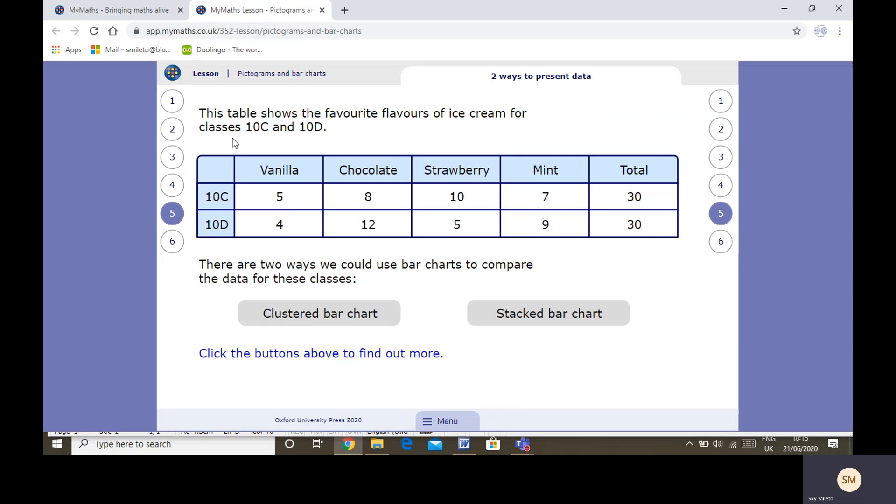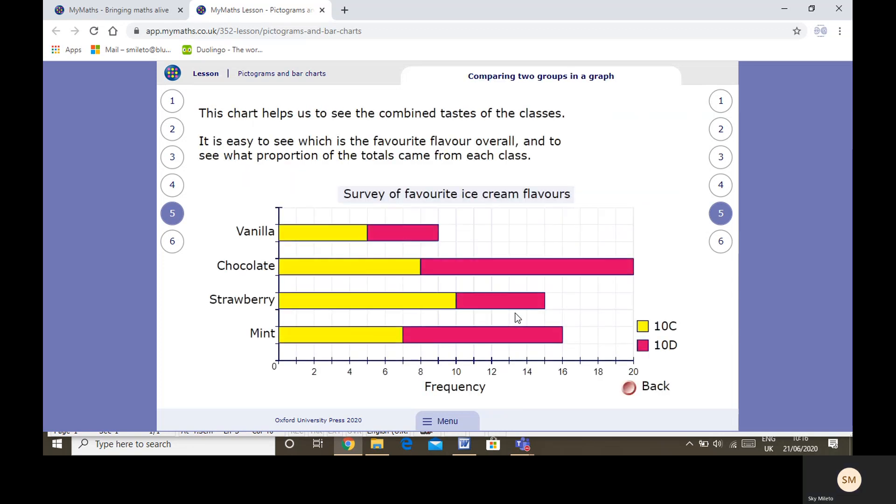This table shows favourite flavours ice cream from classes 10C and 10D. There are two ways which we use bar charts for these classes. We could use a clustered bar chart or a stacked bar chart. Now we're just going to look at stacked bar chart today. Here we can see the difference, and we've got one class, and then on top of that, we've got the other class. So then we can see the total numbers that the classes thought, and individual classes. For example, we can see that strawberry, because the yellow is a longer bar than the pink, we know that more people preferred strawberry in class 10C than 10D. We can also see that chocolate was the overall favourite, because 20 children in both classes like it, but more liked it in 10D than 10C, and so on.